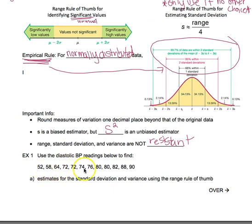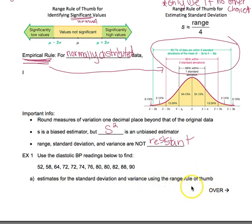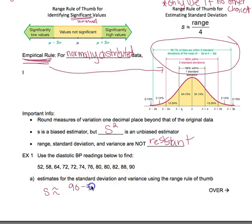In example one, we're using the same diastolic blood pressure readings from the last section. The first thing we're going to find are estimates for the standard deviation and variance using the range rule of thumb. Because the directions specifically told us to use it, the standard deviation is approximately the range — highest value minus lowest value — divided by 4. So that's 90 minus 52, which is 38, divided by 4, giving us approximately 9.5.